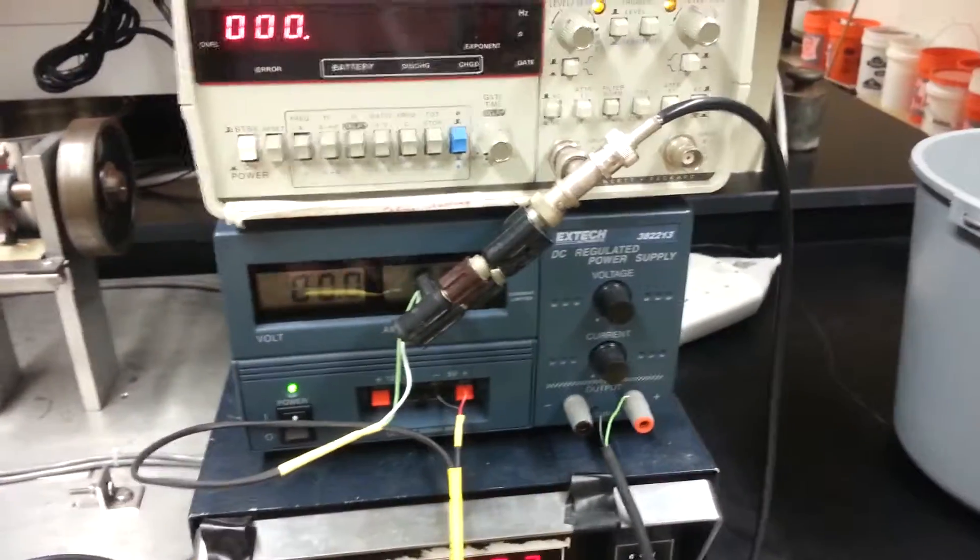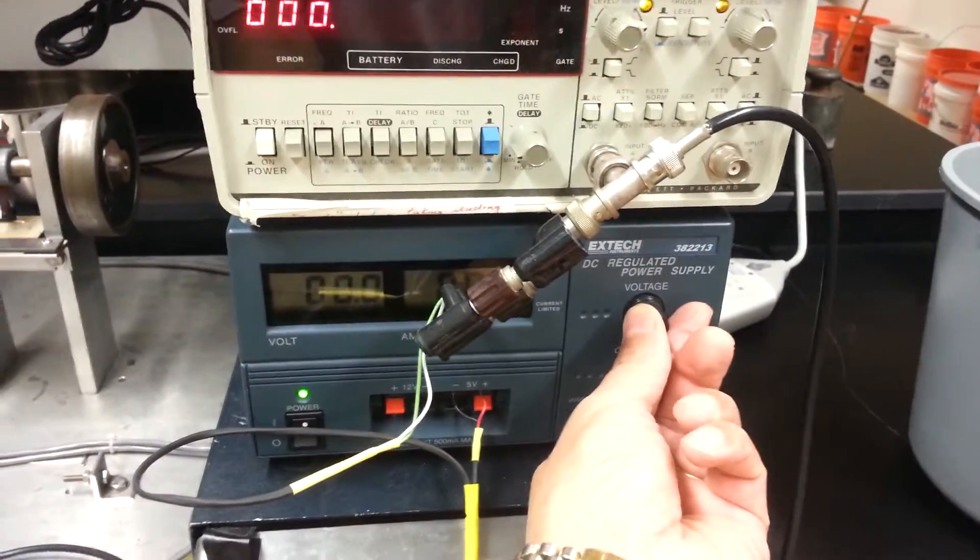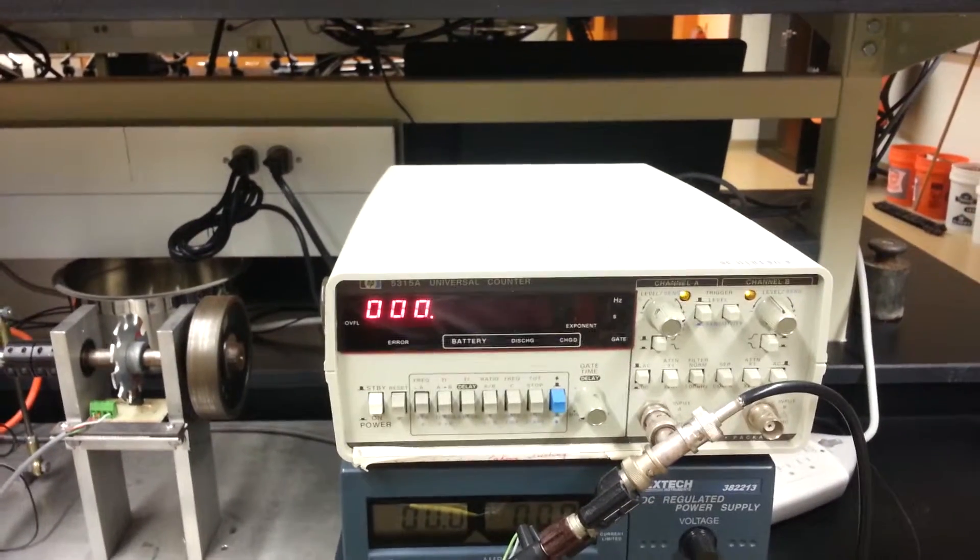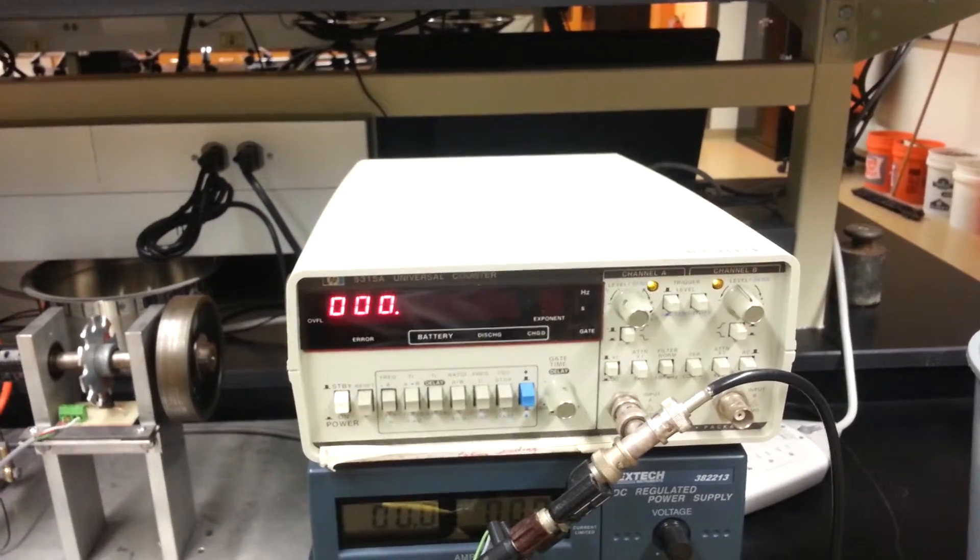The unit in the middle is the power supply that you can adjust the voltage to change the brake resistance, and on top is a counter that measures the shaft rpm.